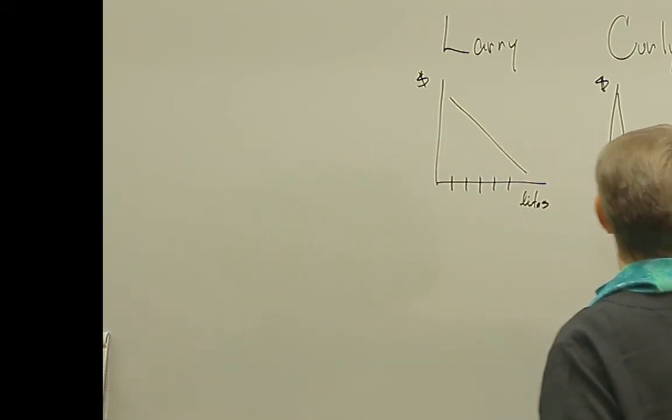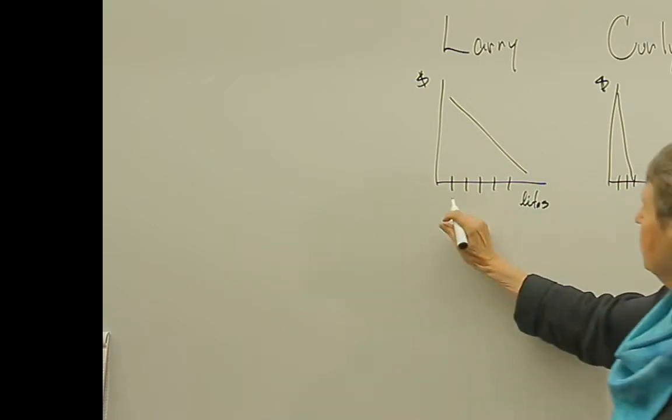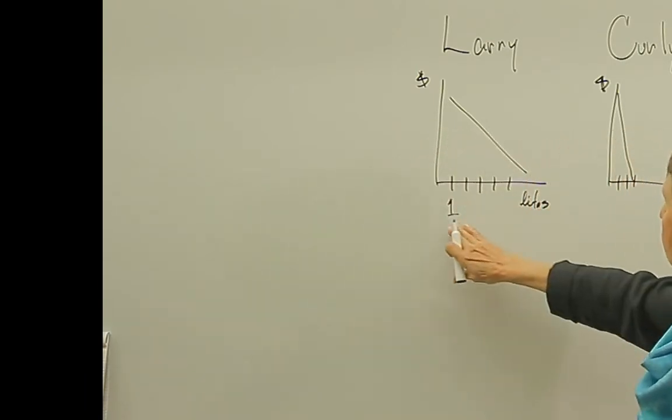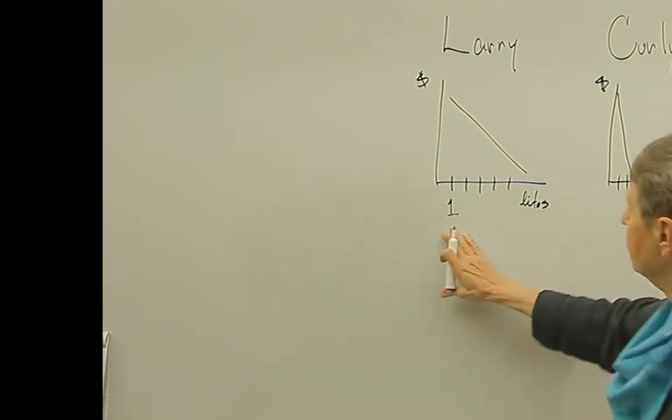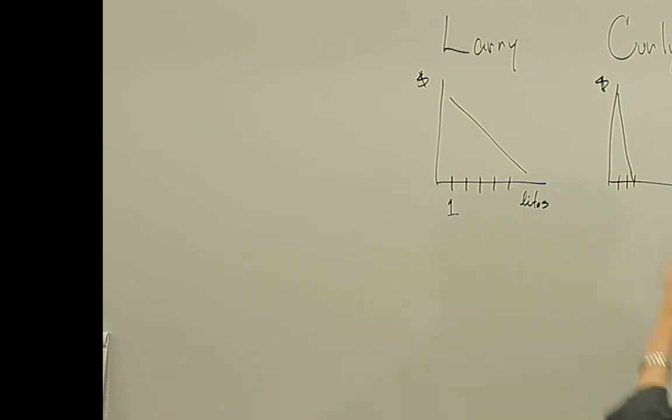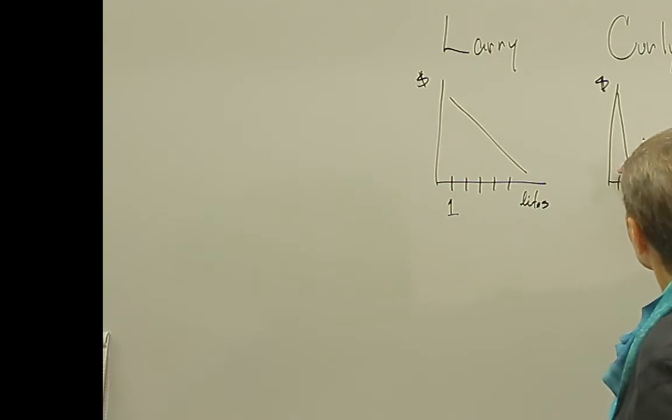One, two, three, four, five, six, seven street lights. The thing about street lights is this first street light, street light number one, can be enjoyed by Larry and Curly and Moe. So if we're trying to figure out what a street light is worth to this society, what we have to do is we have to include Larry's value plus Curly's value plus Moe's value for the first street light.